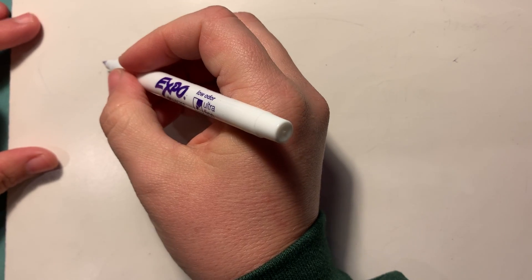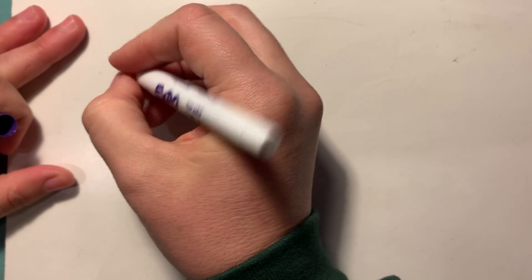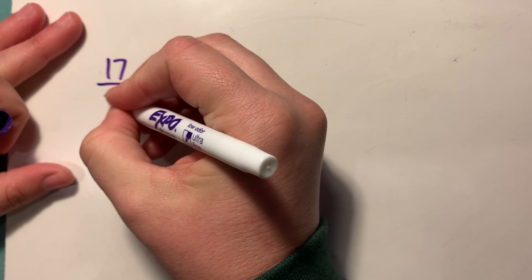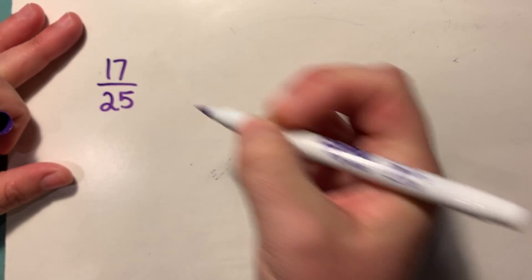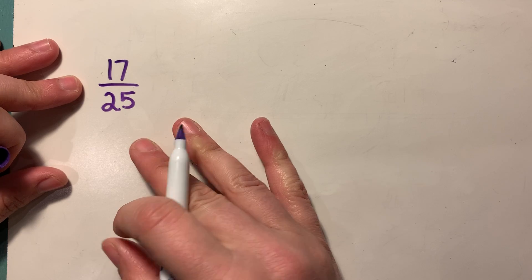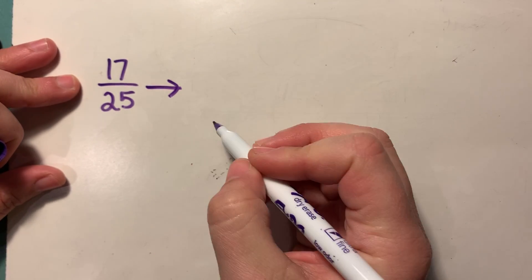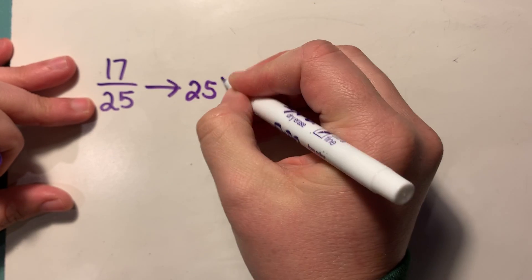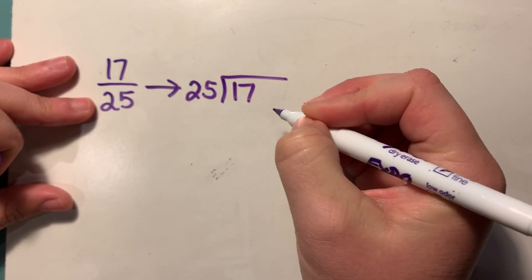Let's do another example. What happens when we have a fraction? Let's do 17 twenty-fifths. I'm going to turn this into a decimal first. So 25 into 17.